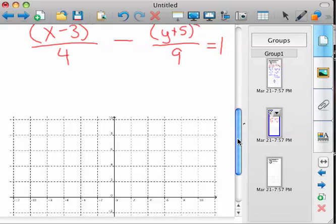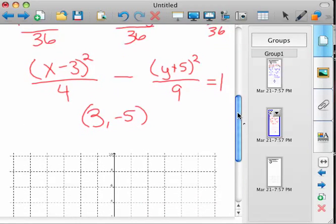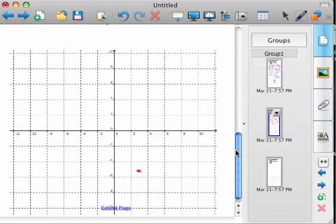And so, again, my center is 3, negative 5. So if we graph that, there's 3, 2, 4, negative 5. You're going to go right and left 2. Up and down 3.